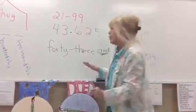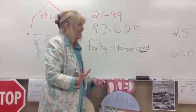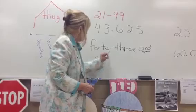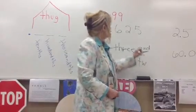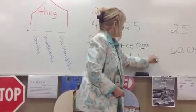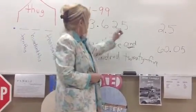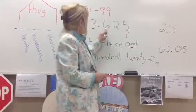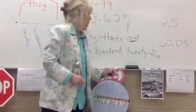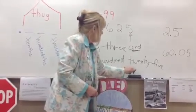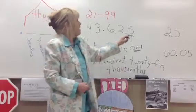Now, what's on the right side of the point? You cover this up and say: how do you read 625 if it was by itself? 625. So you write 625. That 25 is a number between 21 and 99, so it gets a hyphen: six hundred twenty-five. When it's a decimal number, the last word you say is the place value of the last digit. So that's the thousandths place. So now I write that word: thousandths. So that's forty-three and six hundred twenty-five thousandths.